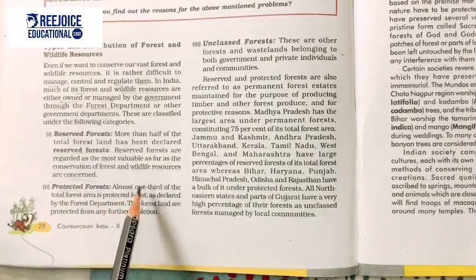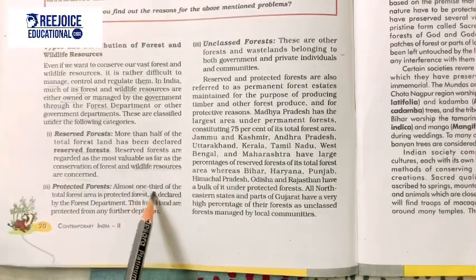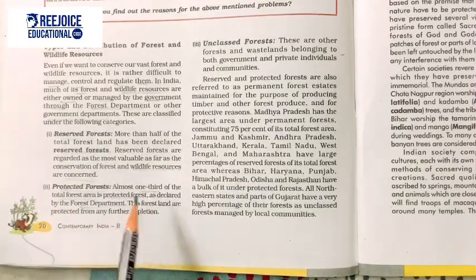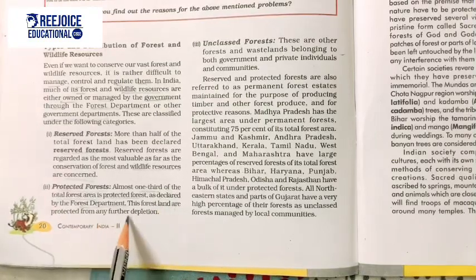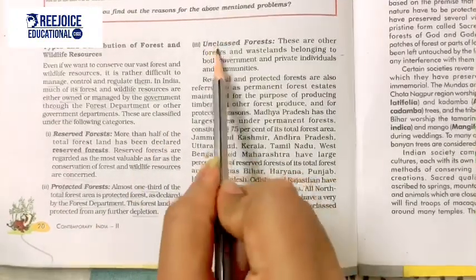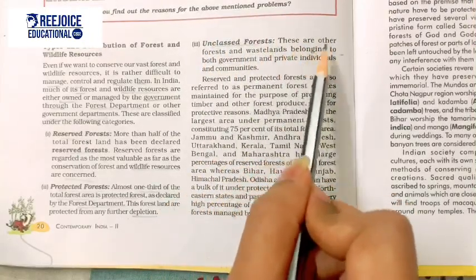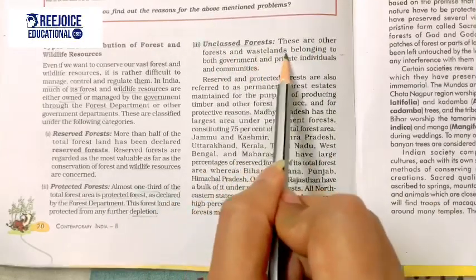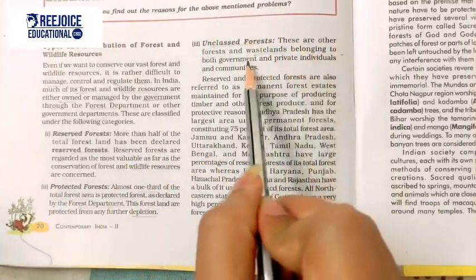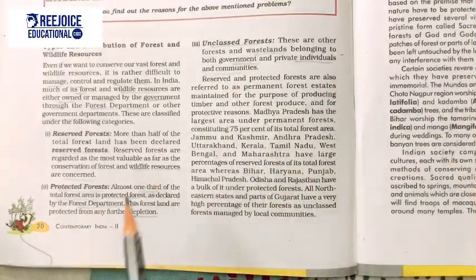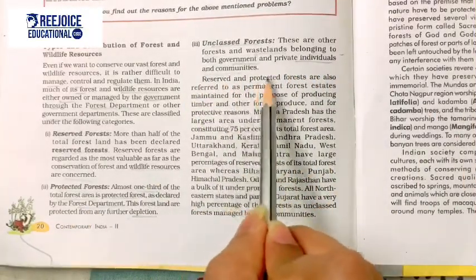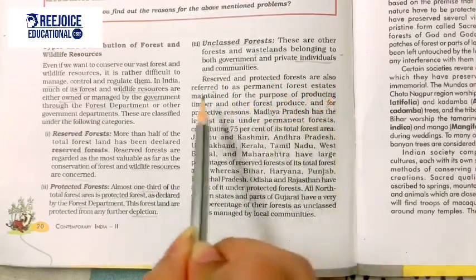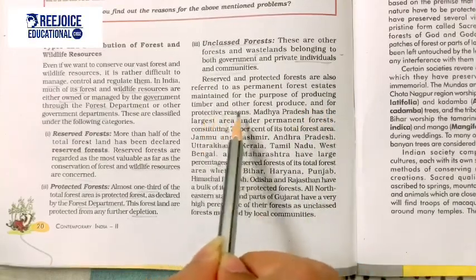Almost one third of the total forest area is Protected Forest, as declared by the Forest Department — land protected from any further depletion. Next is Unclassified Forest — other forests and wastelands belonging to both government and private individuals and communities. Reserved and protected forests are also referred to as permanent forest estates, maintained for the purpose of producing timber and other forest produce, and for protective reasons.